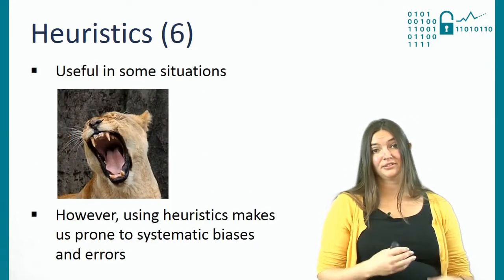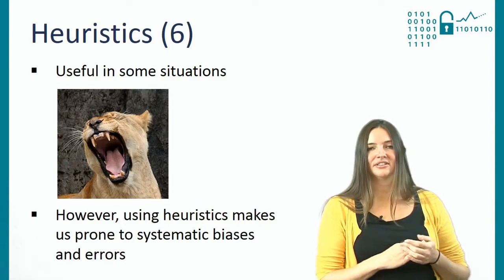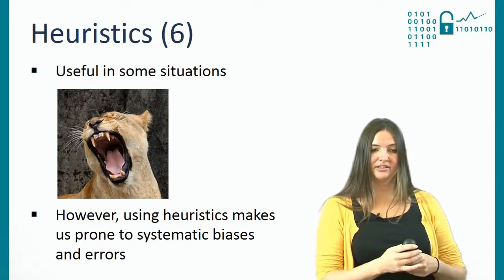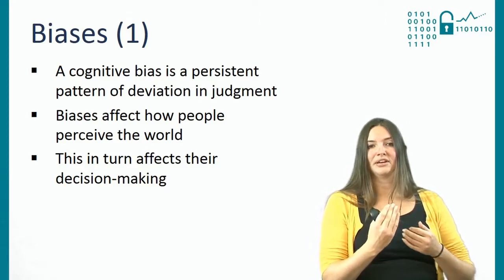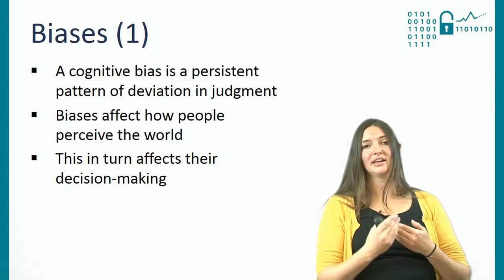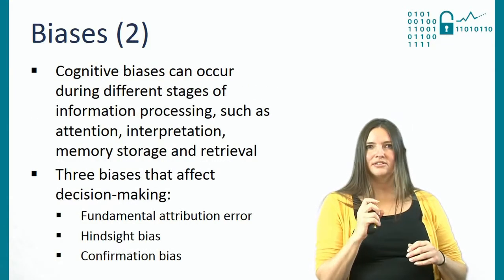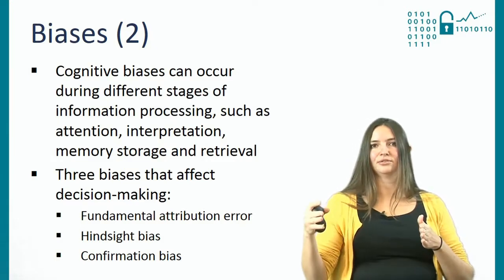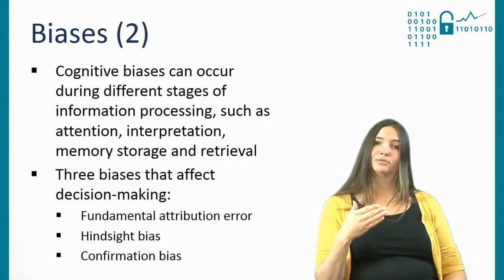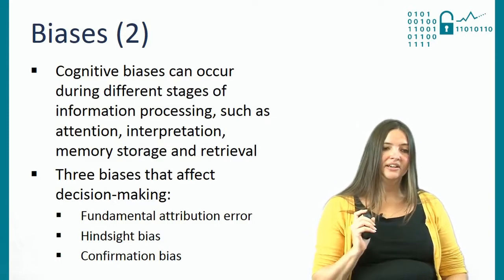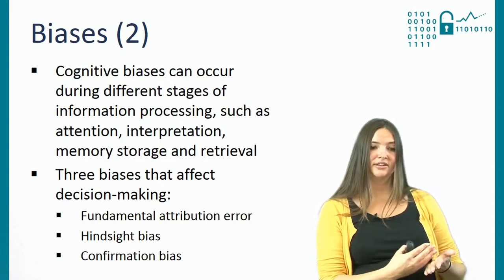Heuristics are very useful in some situations — whenever you see a lion, you might just want to act and not sit down and think about all your options. But the problem with heuristics is that they also make us prone to systematic biases and errors. A cognitive bias is a persistent pattern of deviation in judgment — how you're not being rational. Biases affect how people perceive the world and therefore the decisions they make. They can occur during different stages of information processing: paying attention, interpreting information, storing it in memory, and retrieving it. The three biases relevant to decision-making are the fundamental attribution error, hindsight bias, and confirmation bias.